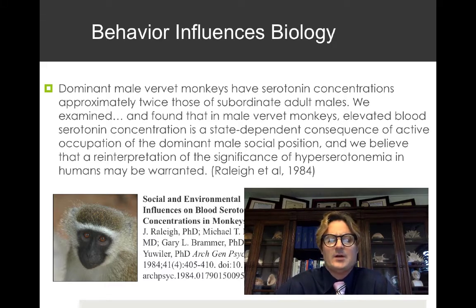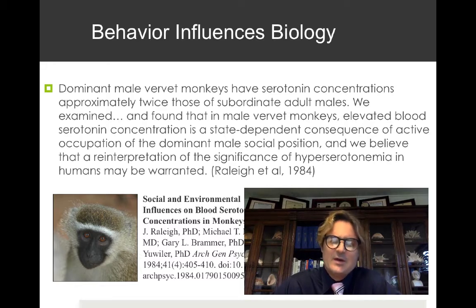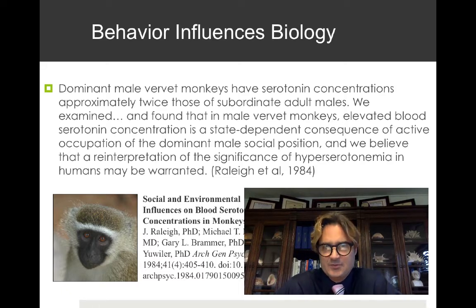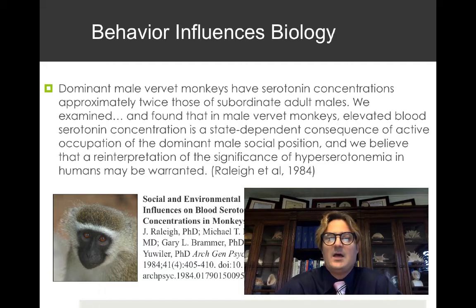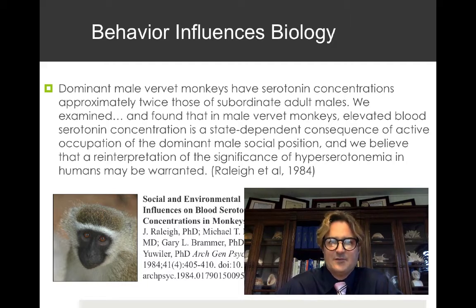So we see that serotonin levels positively correlate with social status. Does this apply to human beings? Research conducted on college students found that in fraternities, the president typically has the highest serotonin levels, pledges have lower levels, and you can approximate individual members' serotonin levels by their status in the fraternity. So it looks like this generalizes to humans as well as lobsters.